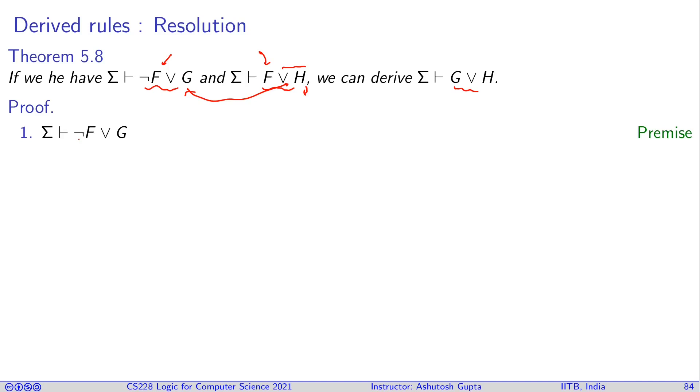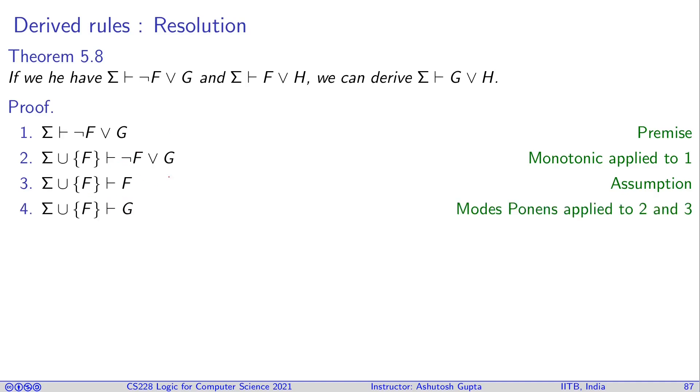So we have not F or G here, and we want to somehow get to G or H on the right hand side. So let's see how we can get that. So we assume F here, and you can still say that I can derive the same thing—it's monotonicity. And from F, I can always derive F because of assumption. We can apply modus ponens and we can obtain G. Now, since we have G, we can always extend it to anything. We get G or H. So by assuming F, I got G or H. Now, the goal is by assuming not F, I want to get G or H and then we'll do by cases.